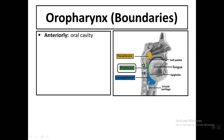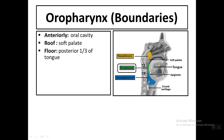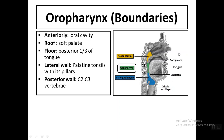The next part is the oropharynx, situated behind the oral cavity. Its boundaries are: anteriorly the oral cavity, superiorly the soft palate, and the floor is formed by the posterior one-third of the tongue. The lateral wall contains the palatine tonsils with their pillars, and the posterior wall corresponds to the second and third cervical vertebrae.